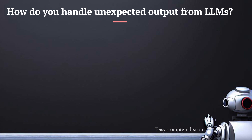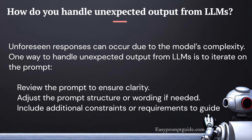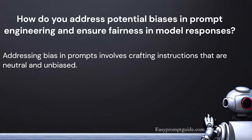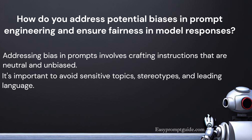How do you handle unexpected output from large language models? Unforeseen responses can occur due to the model's complexity. One way to handle this is to iterate on the prompt: review the prompt to ensure clarity, adjust the structure or wording if needed, and include additional constraints or requirements to guide the model's output. How do you address potential biases in prompt engineering and ensure fairness in model responses? Addressing bias involves crafting instructions that are neutral and unbiased, avoiding sensitive topics, stereotypes, and leading language.